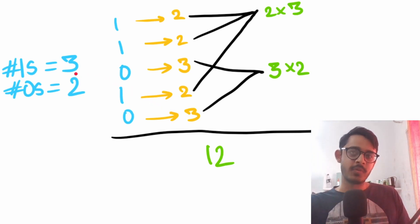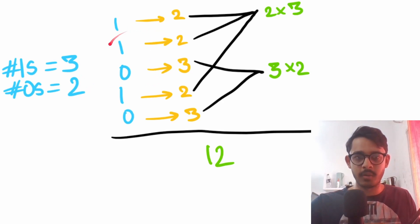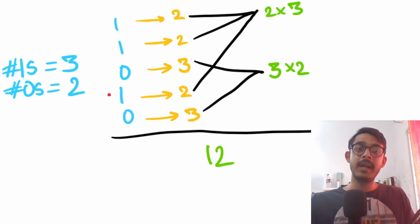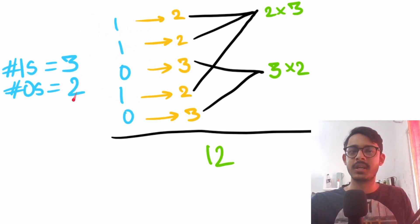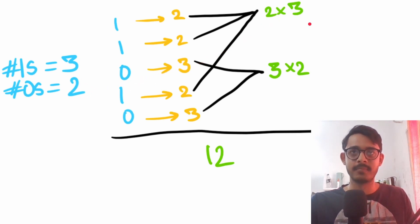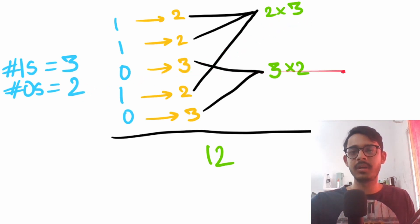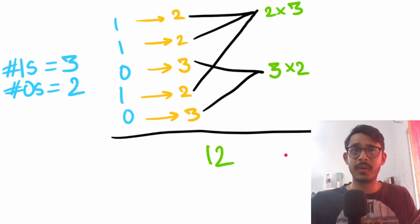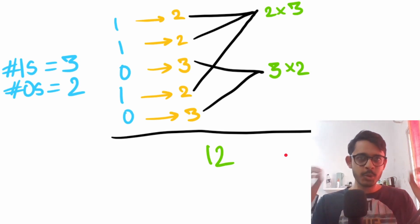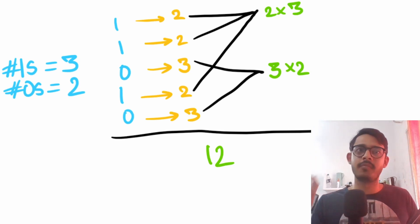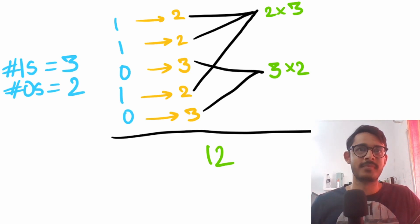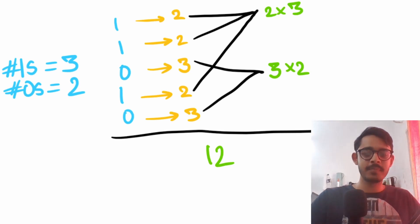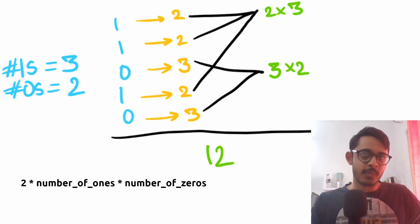There are three 1s and two 0s. Each 1 disagrees with 2 zeros, and each 0 disagrees with 3 ones. We simply compute 2 × number_of_ones × number_of_zeros. In this case, 2 × 3 × 2 = 12. Super simple — we just counted the number of ones and zeros and applied that formula.